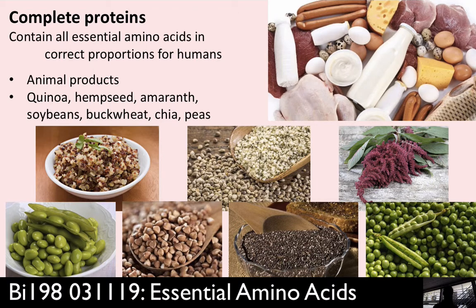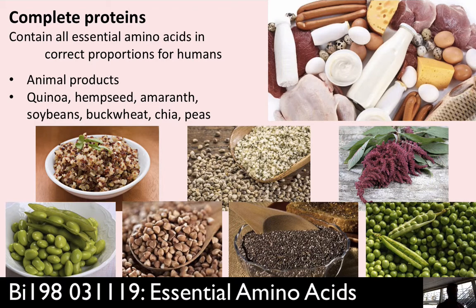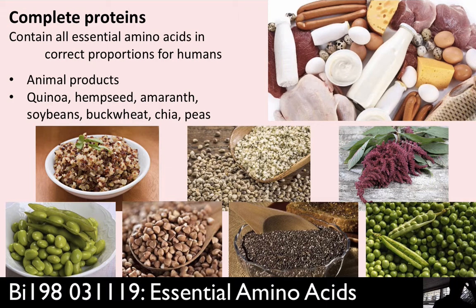There are also plant-based complete proteins for those who want to tread more lightly on the earth. Quinoa and hemp seed — which is delicious and nutty — are complete proteins. Amaranth is another grain quite similar to quinoa. Soybeans are also a complete protein, which is why tofu and edamame are popular. Buckwheat — like buckwheat pancakes — chia, and peas are also complete proteins.